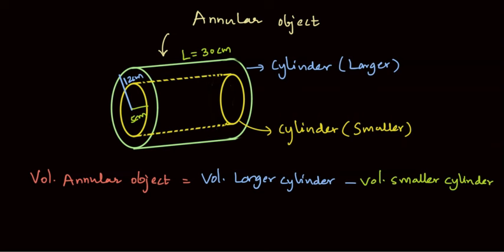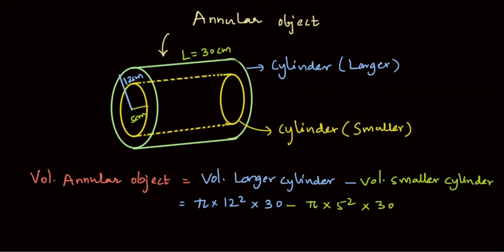To get the volume of this annular cylinder, we can put in the values as follows. The volume of the larger cylinder will be π times 12 squared times the length L which is 30, minus π times 5 squared times 30. Here, π r squared is the surface area of the circular base for the larger cylinder and the smaller cylinder respectively.